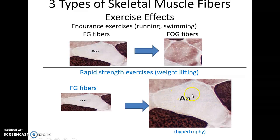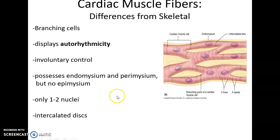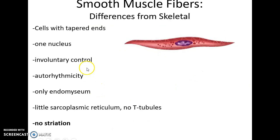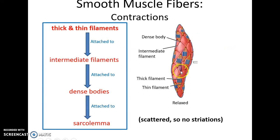Exercise can cause fast glycolytic fibers to turn into fast oxidative glycolytic fibers. Resistance training can cause muscle fibers to undergo hypertrophy — getting thicker without producing new fibers. Cardiac muscle tissue has short cells, autorhythmicity — meaning they can contract on their own — are involuntarily controlled, have no epimysium, and have intercalated discs with gap junctions and desmosomes, as seen here.